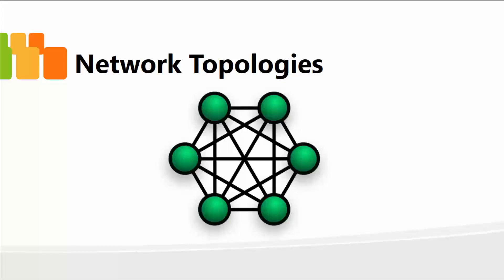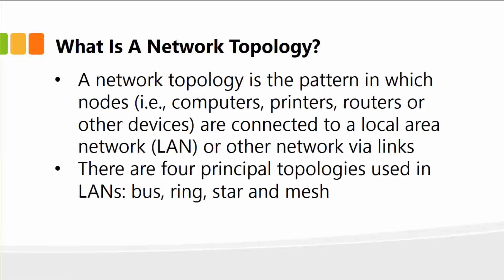In this lesson, I'm going to talk about what a network topology is all about and different types of network configurations or topologies that we can actually use. The basic concept of a network topology is that it's a pattern in which various computers, printers, routers, or other devices on your network are connected within your local area network, wide area network, or other network through different links. There are four principal topologies used in local area networks: bus, ring, star, and mesh.